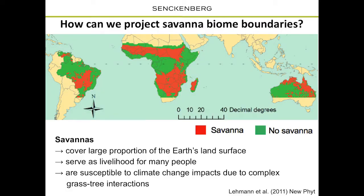The main reason I'm doing this is that I'm interested in understanding biome boundaries, primarily in savannah ecosystems. Savannahs occur across huge areas in the tropics — in Australia, Africa, South America, and India. They cover large areas, serve as livelihoods for many people, and play an important role in global biogeochemical cycles. Climate change or land use change in these systems has strong implications for people, biodiversity, and the climate system.